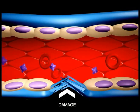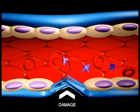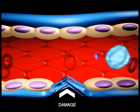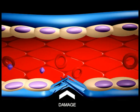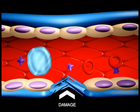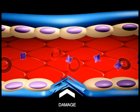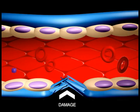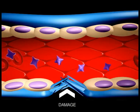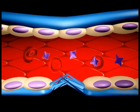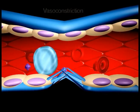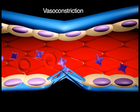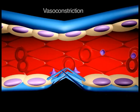Damage to small blood vessels and capillaries frequently occurs. When these vessels are damaged, there are three basic mechanisms that promote hemostasis, or the stoppage of bleeding. Following damage, there is an immediate reflex that promotes vasoconstriction, thus diminishing blood loss.